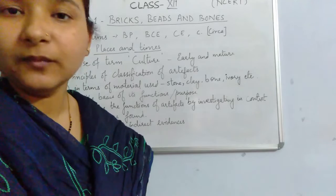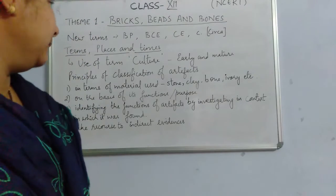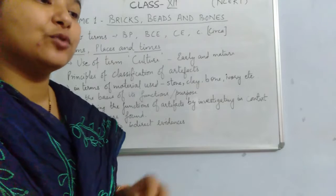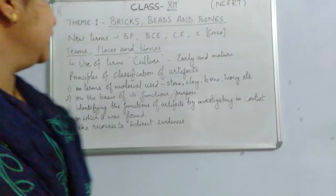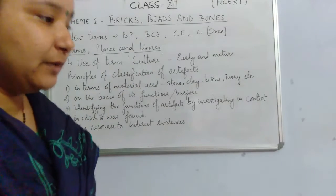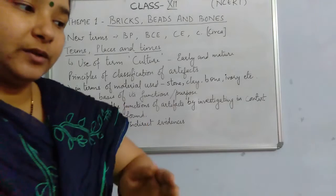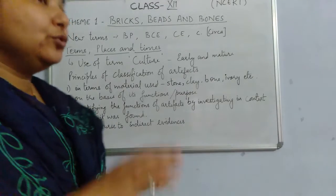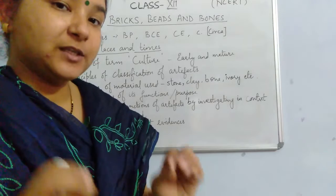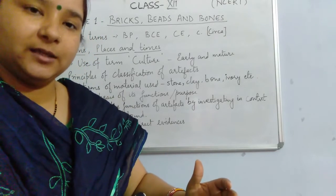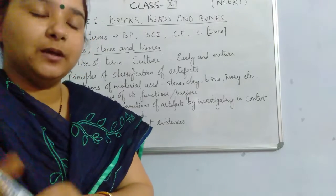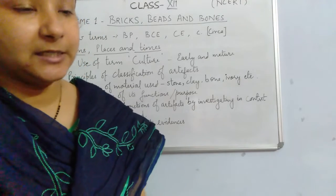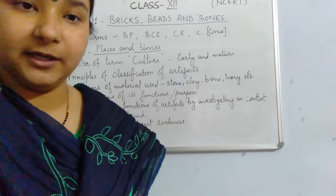Because the Harappan script remains undeciphered, our information about the Harappan civilization largely depends on artifacts and archaeological sources found during excavation. Whatever material remains we have found — based on those, historians have tried to construct the history of the Harappan civilization. These artifacts have been categorized by historians, and the term used for such groupings is 'culture.' Artifacts found in excavation that share certain similarities are placed in one group or category.